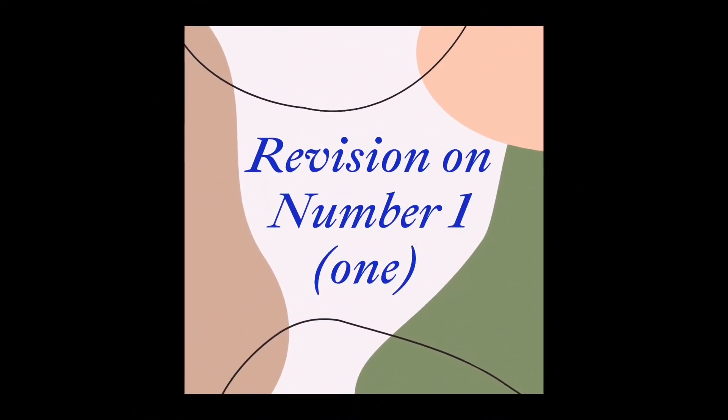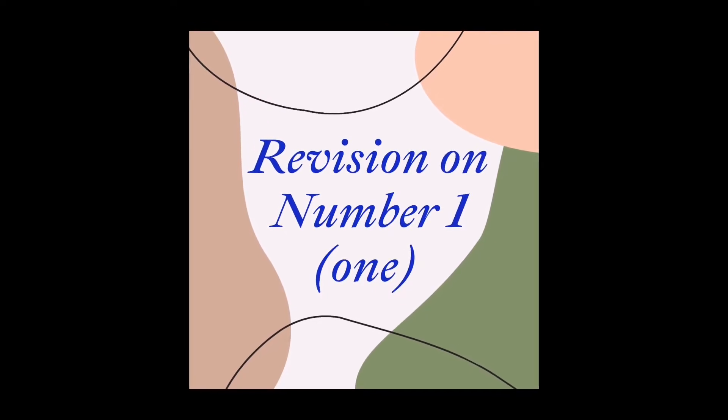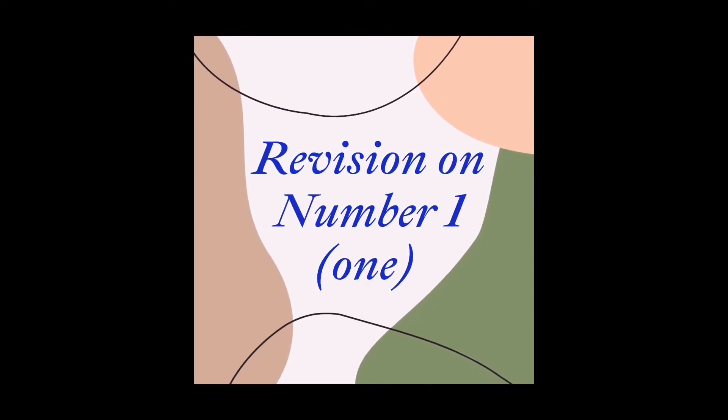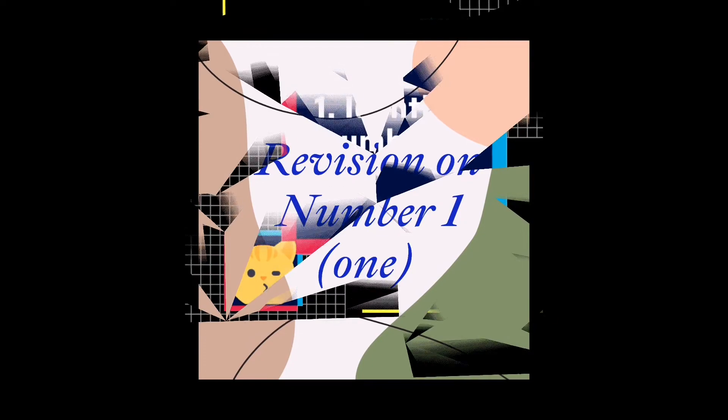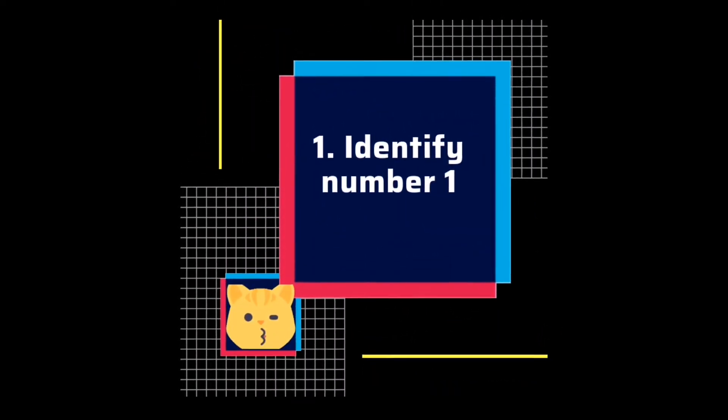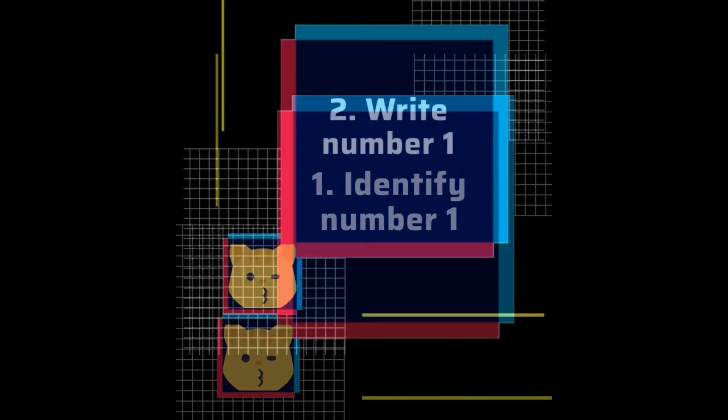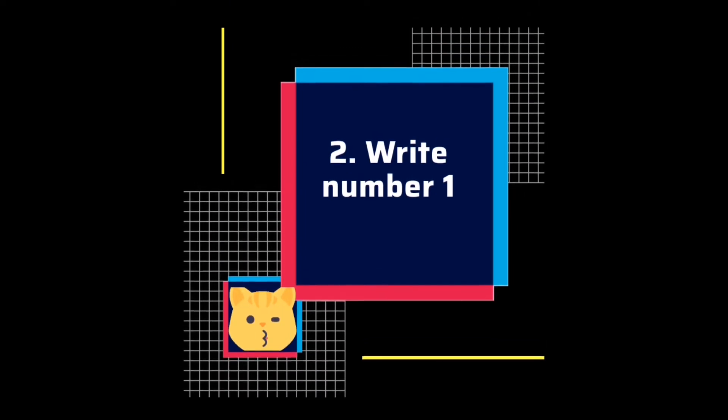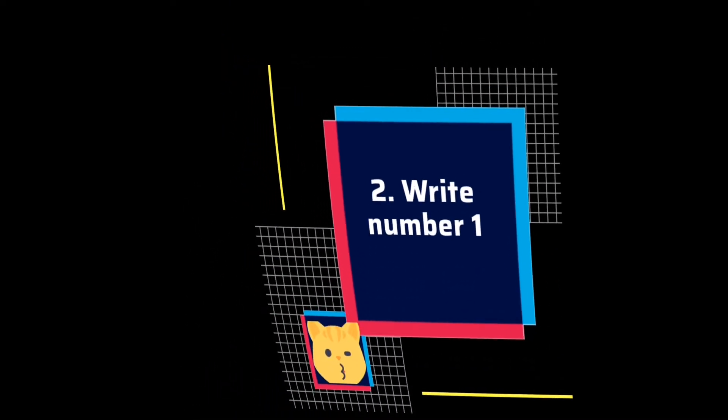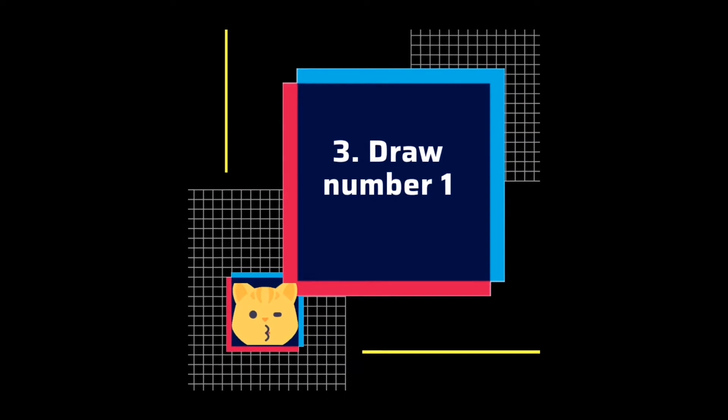So today's lesson is a revision of what we have learned a few days ago. At the end of this video, you will be able to: number one, identify number one; two, write number one; and three, draw number one. But along with number one, we have to practice also writing the shape circle and the identification of the color red. Here we go!